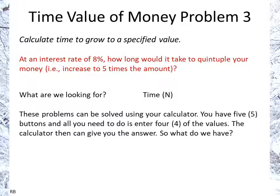Now we can use the calculator — we have the 5 buttons, and what we need to do is enter 4 values. Again, we have PV, FV, I, N, and PMT.